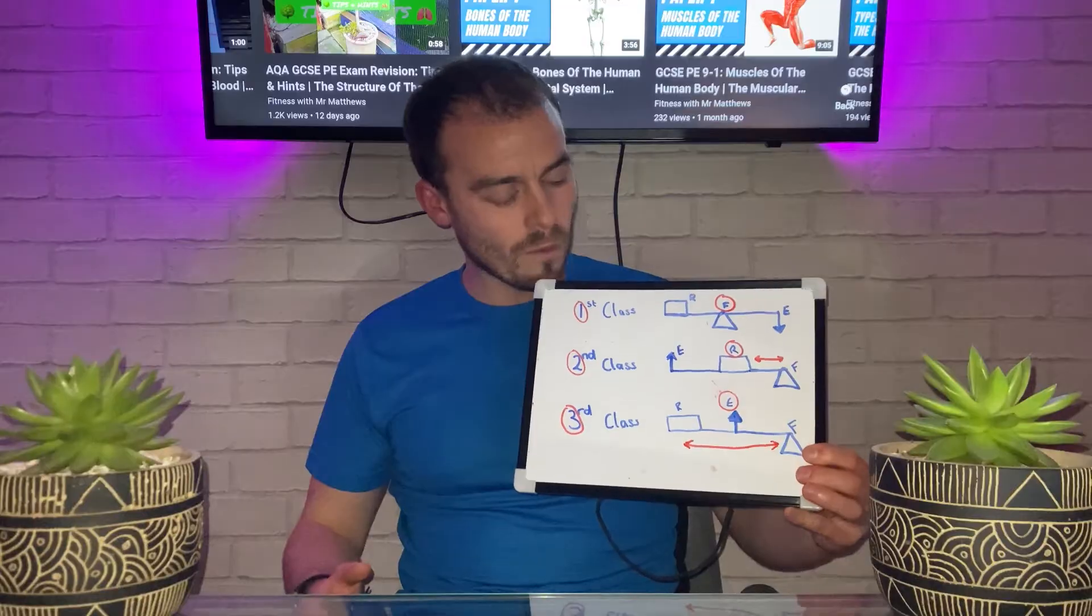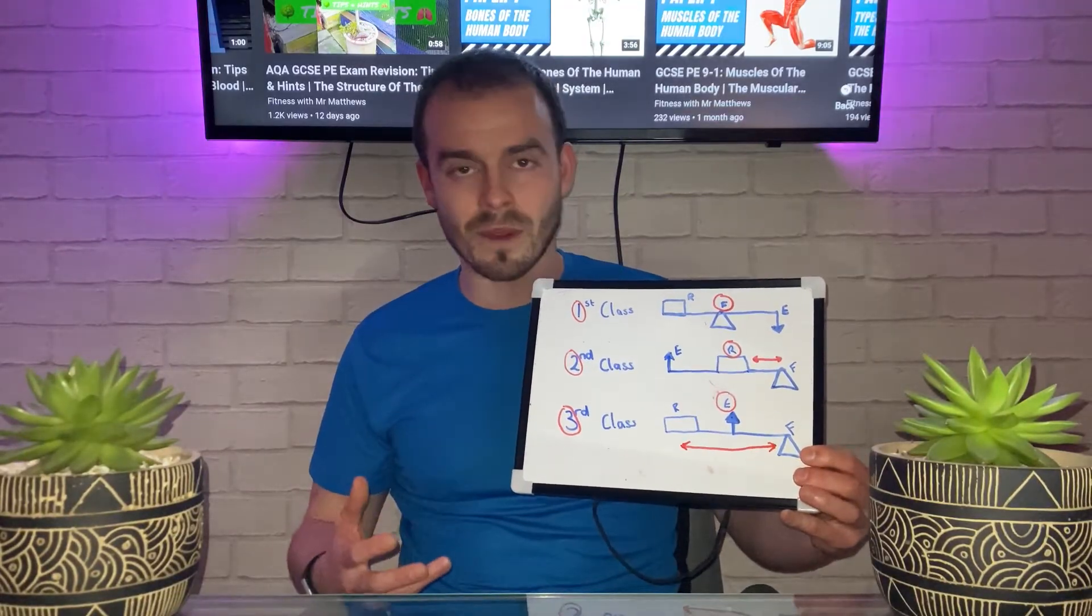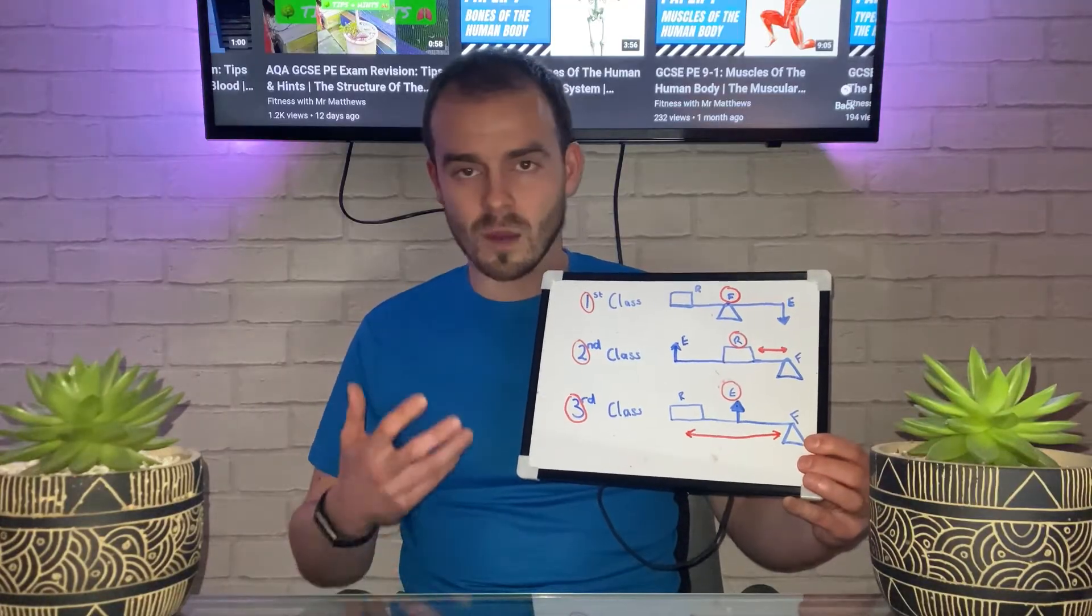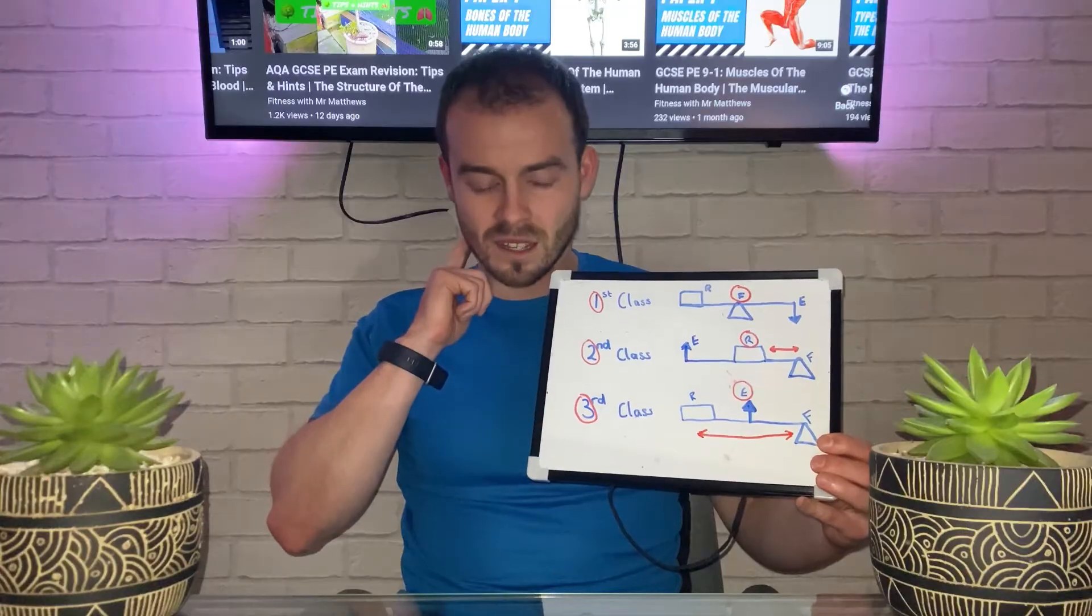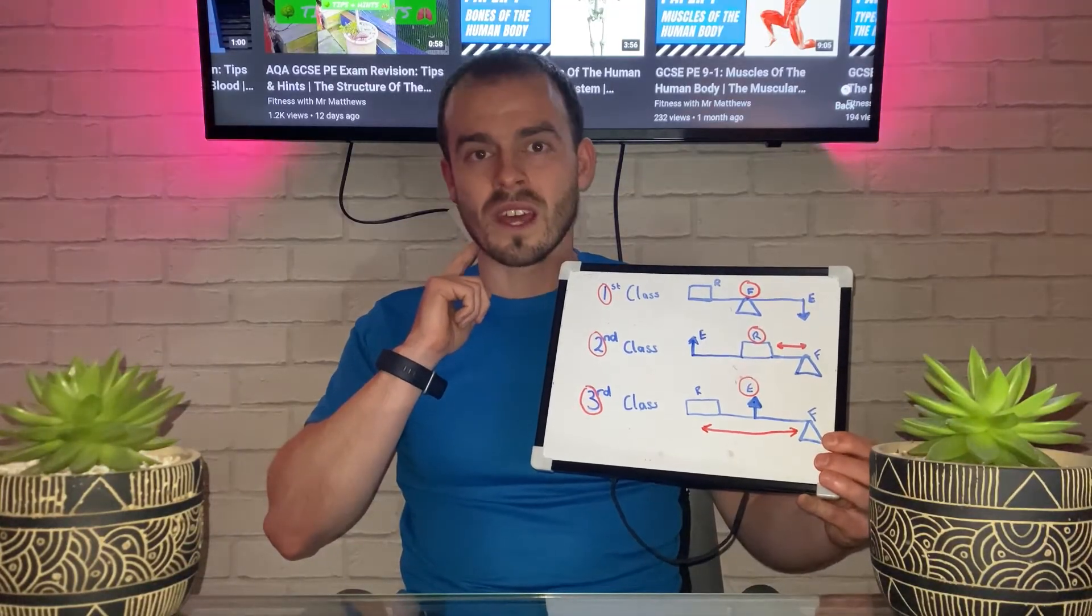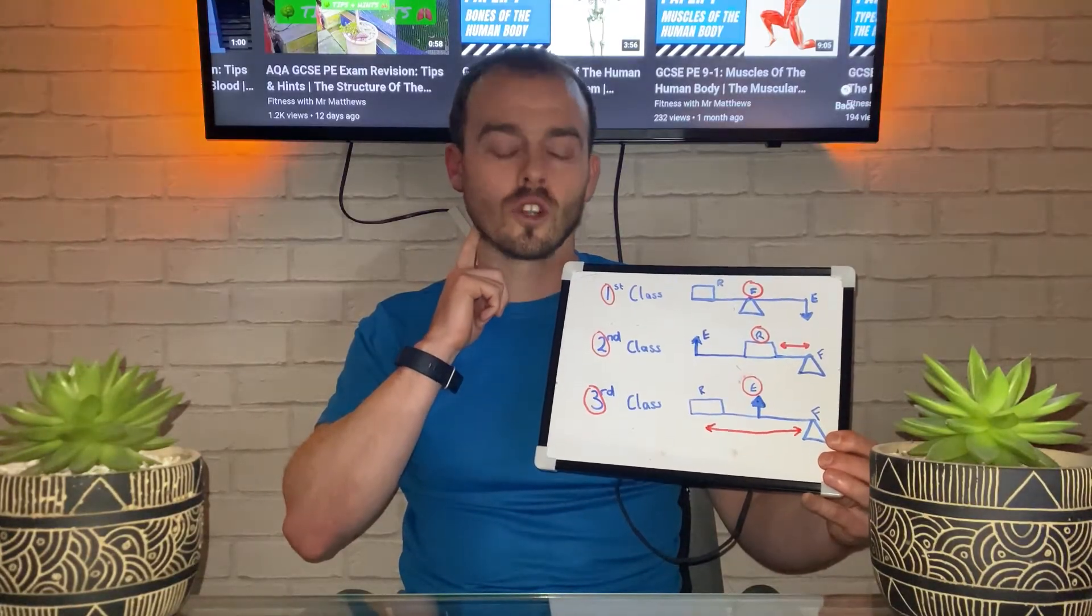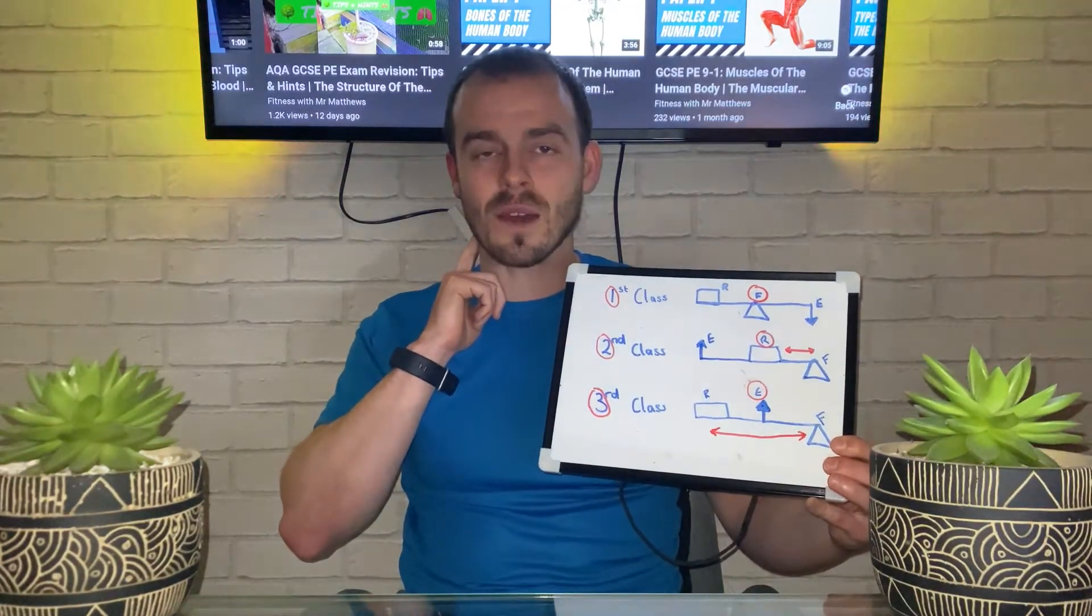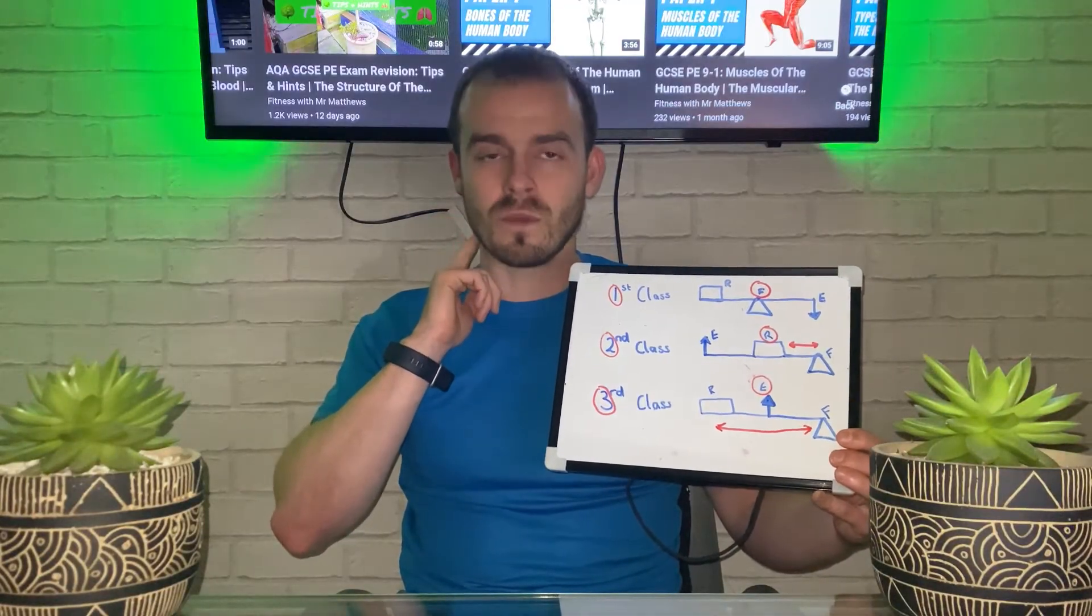Now moving on, let's look at the first class lever system and think about sporting examples. A couple of examples include movement of the neck forwards and backwards. In that scenario, the fulcrum is the joint that sits just behind the jawbone, the effort is the muscles in the neck, and the resistance is the weight of the head.